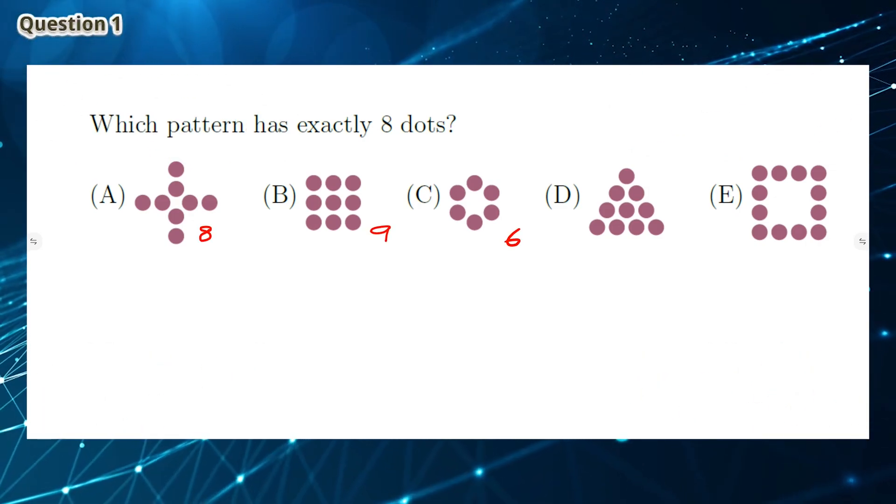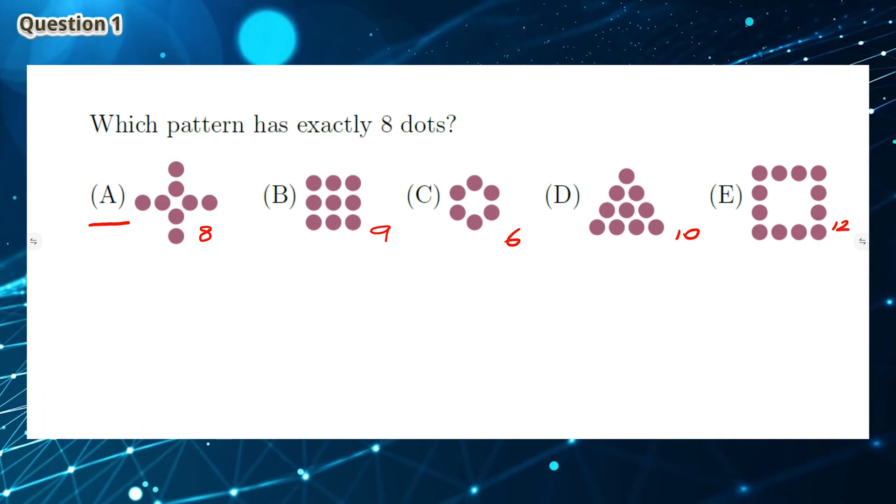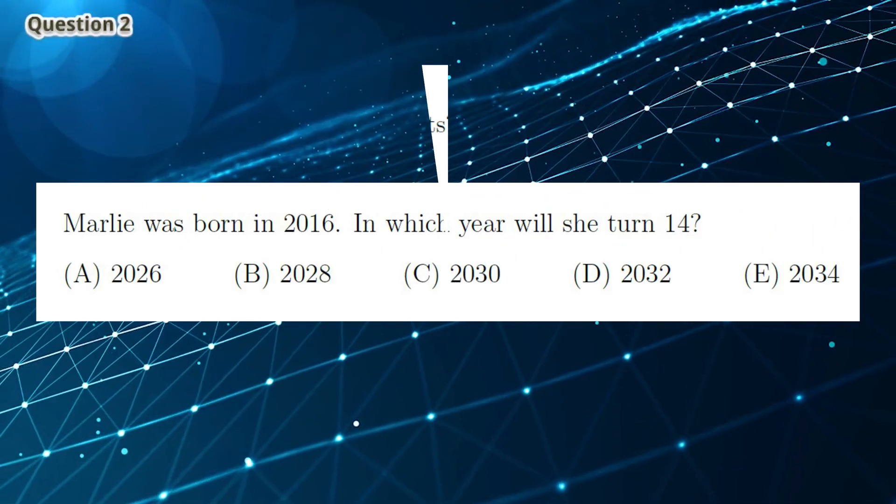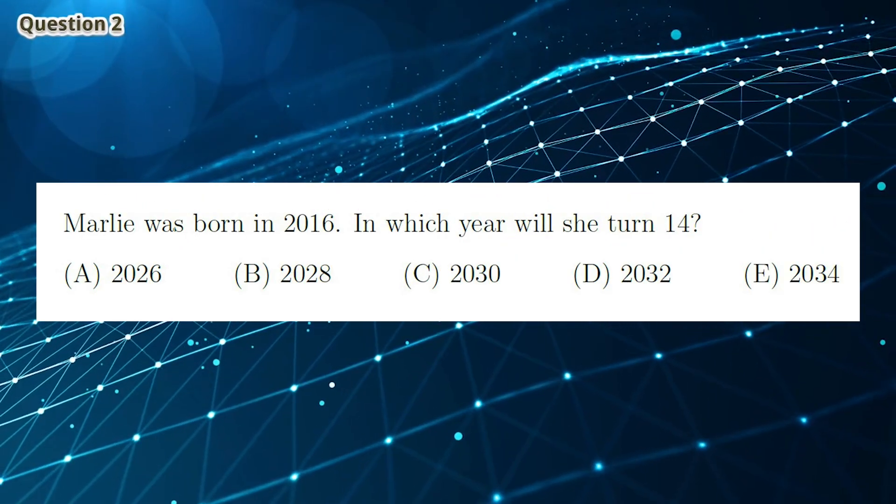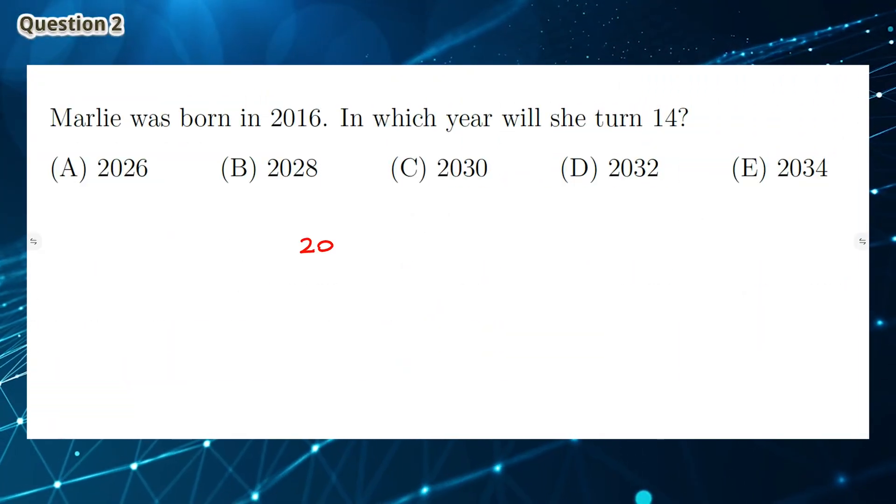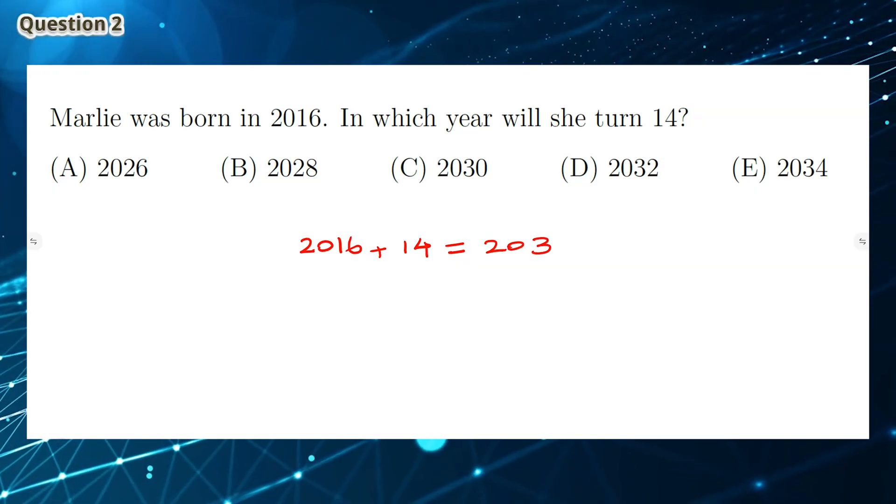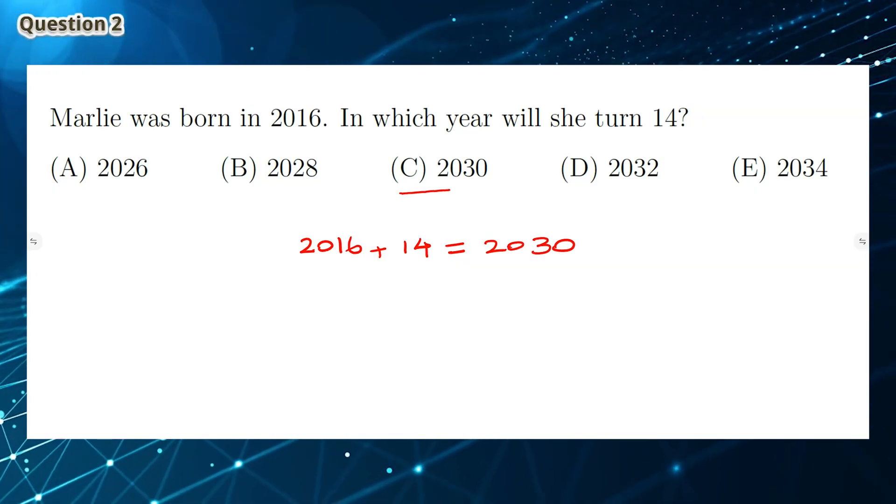Question 1: If we count the number of dots for each pattern, we find that option A has 8 dots. Question 2: Marley was born in 2016, so 14 years later, she will be 14 in the year 2030. So the answer is C.